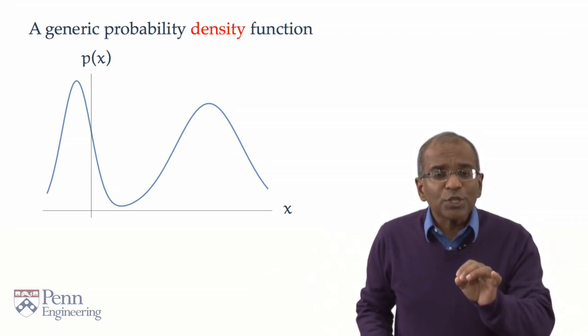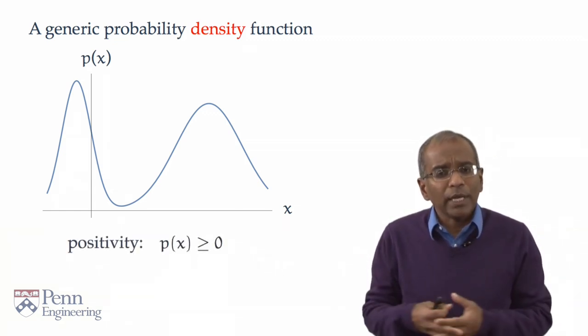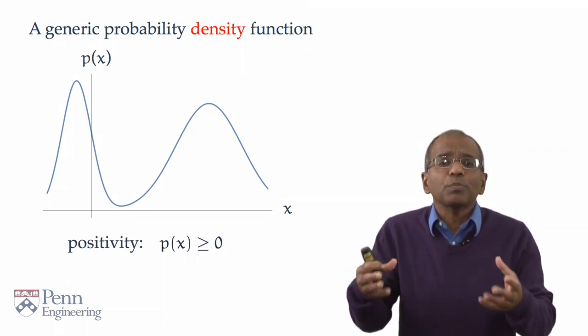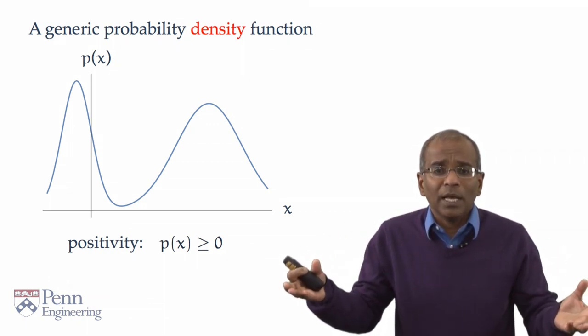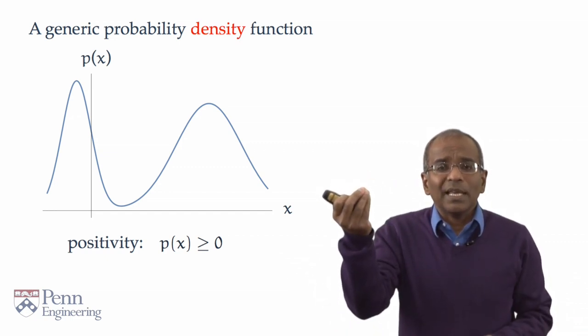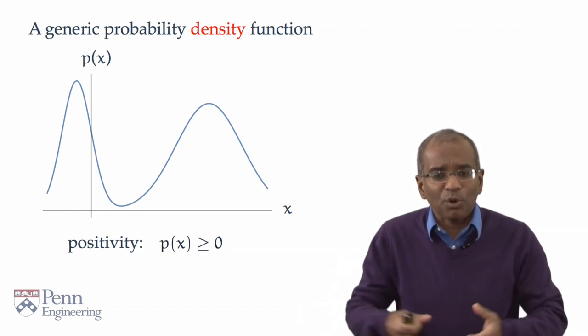If it is to constitute a bona fide density, what properties should it have? Well, naturally, it's a mass density, and therefore, the function should be non-negative everywhere. It would make no sense to say that the mass density is negative at a certain point. We do not count in negative probabilities.